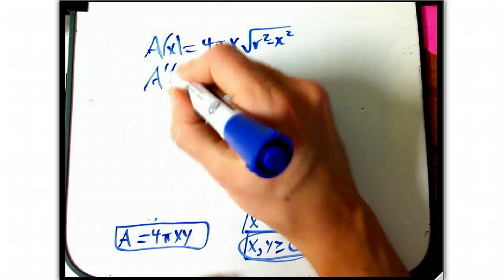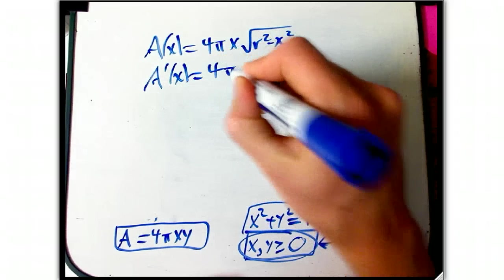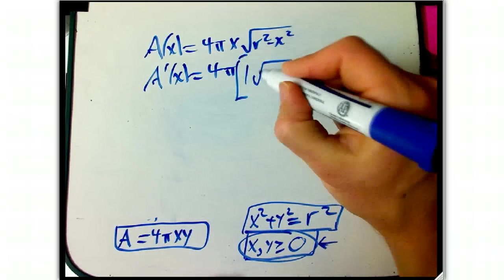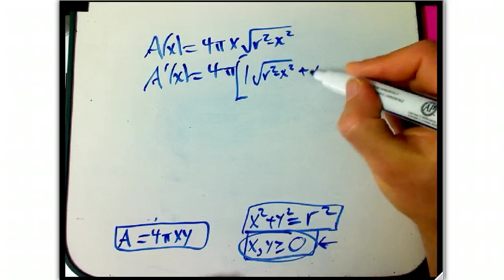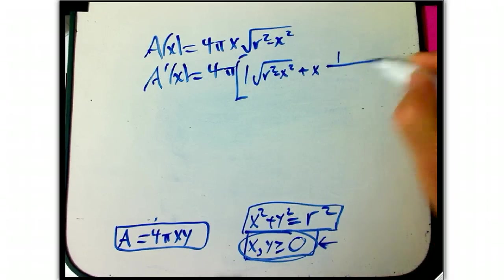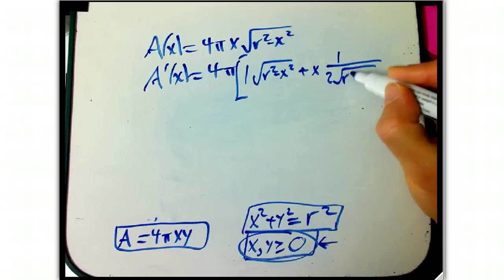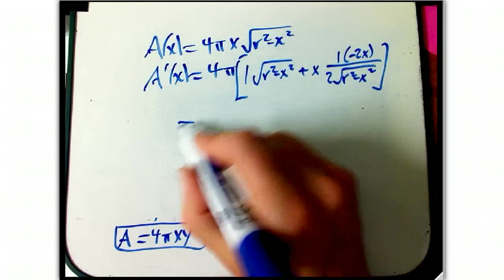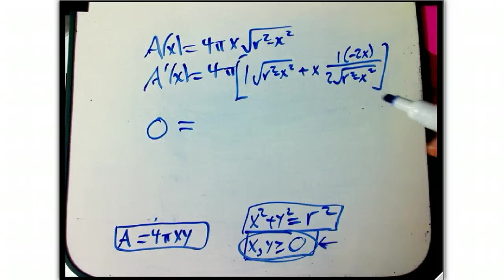A prime of X, 4 pi is a constant, now we need the product rule. So it's all times 1 times the square root, plus X times 1 over 2 times the square root, and that's the derivative of a square root function, and then times minus 2 X from the chain rule. Now I'm going to set that equal to zero.